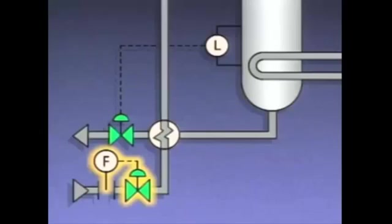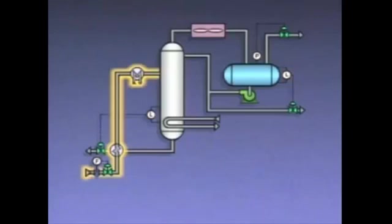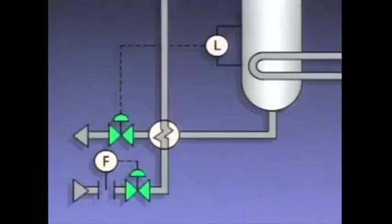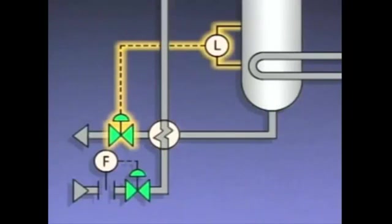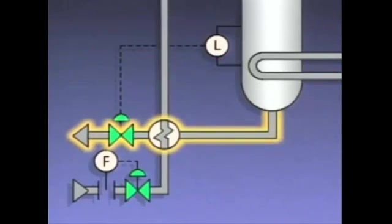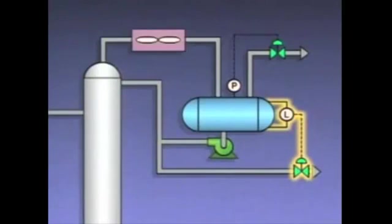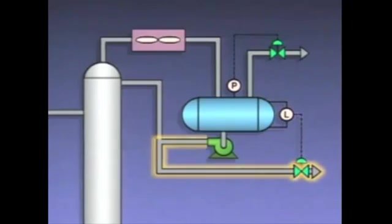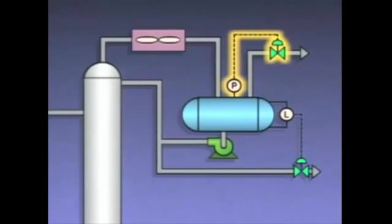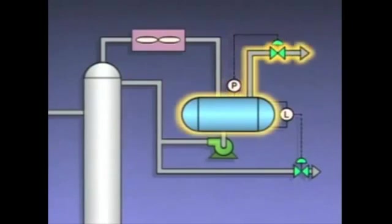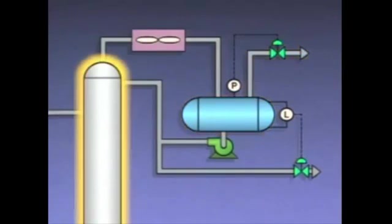The feed flow control loop provides a means to control the rate at which feed flows into the tower. The bottom level control loop controls the level in the bottom of the tower by controlling the bottoms product flow. The overhead product level control loop regulates the level in the overhead receiver by controlling the overhead product flow. The off-gas stream pressure control loop controls the release of gas from the overhead receiver, which controls the pressure in the distillation tower.